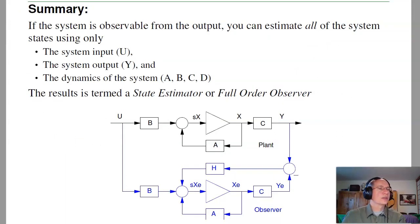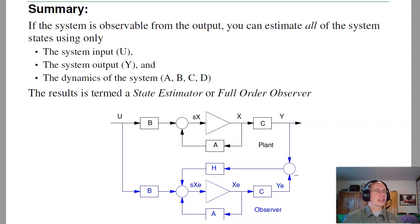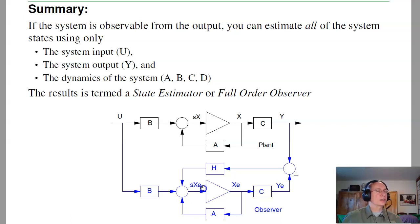In summary: if a system is observable from the output, you can estimate all of the system states using only the system input, the system output, and the dynamics of the system. The result is termed a state estimator or full-order observer. That's lecture number 19 for ECE 463 Modern Control — Full Order Observers.